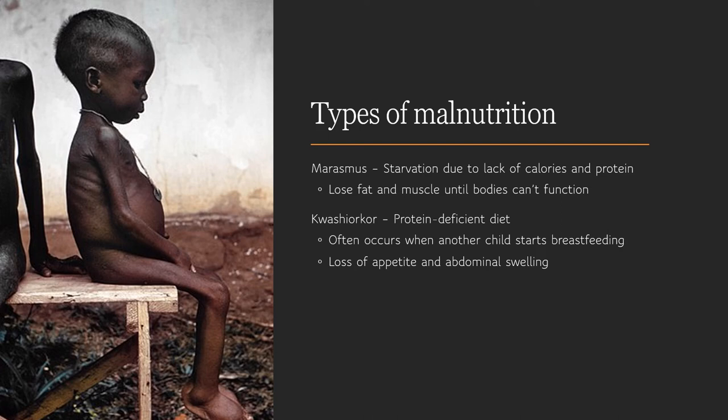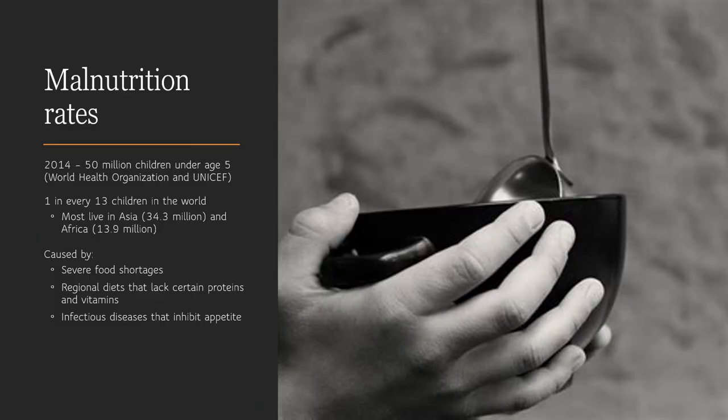Children with kwashiorkor may appear to be a typical weight or even plump, but this is deceptive — the swelling is due to fluid retention, not fat or muscle. Symptoms include loss of appetite, hair color changes, dehydration, pitting edema, lack of muscle and fat tissue, irritability and fatigue, and frequent skin infections or slow-healing wounds. Overall, malnutrition is a significant global problem: one in every 13 children worldwide is affected, most in Asia and Africa, though children in the United States suffer from malnutrition as well. It is caused primarily by severe food shortages, regional diets lacking certain proteins and vitamins, and infectious diseases that inhibit appetite.